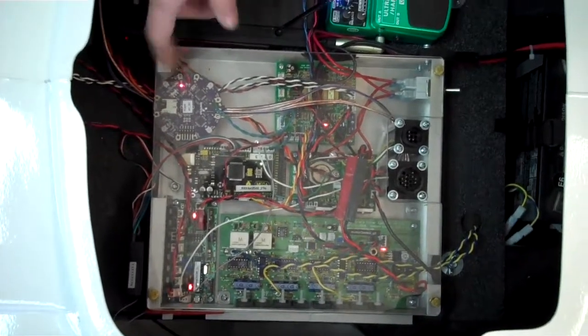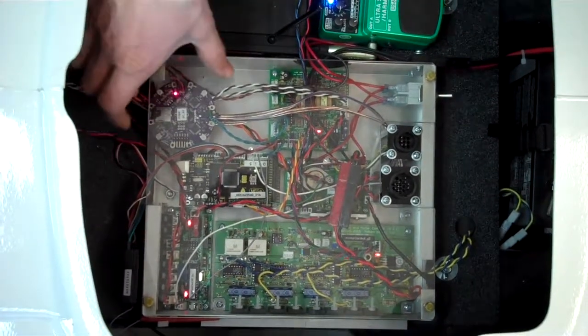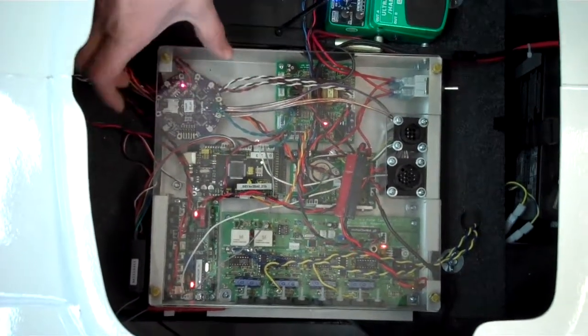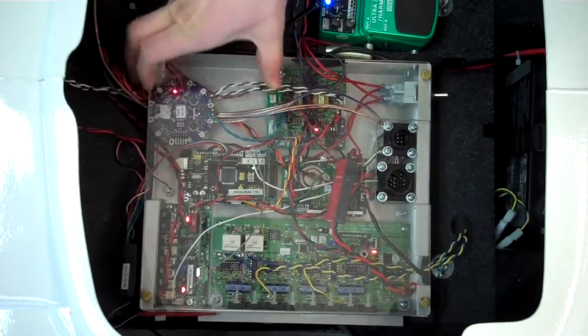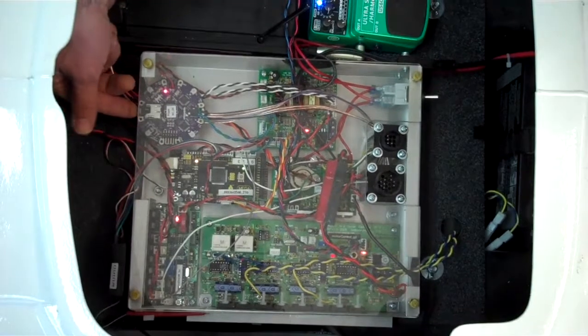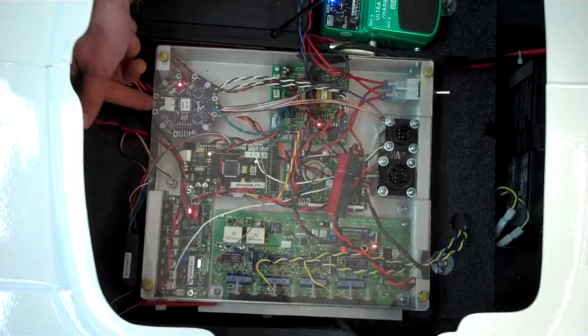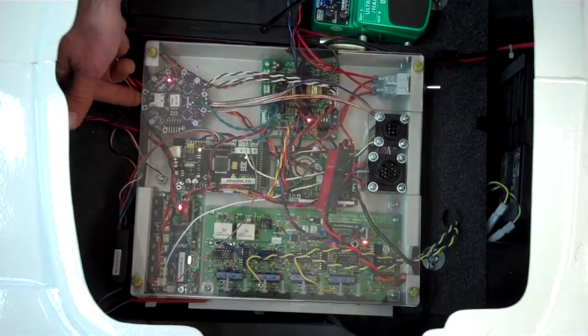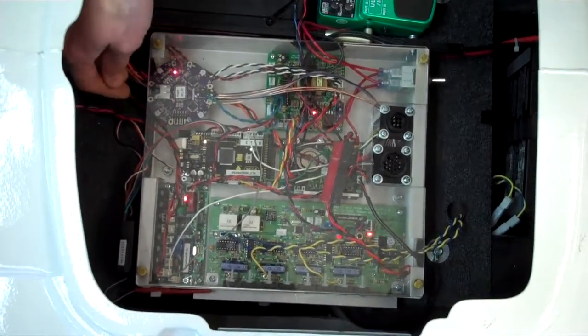So the next component is the MP3 player. There's two different styles of MP3 players that we've been using. One is a round board and one is a rectangle board. But they both go in this spot right here. And they both have the SD card for the MP3 player is right here. So if you need to take it out to change songs or anything like that, that's where it's going to be.